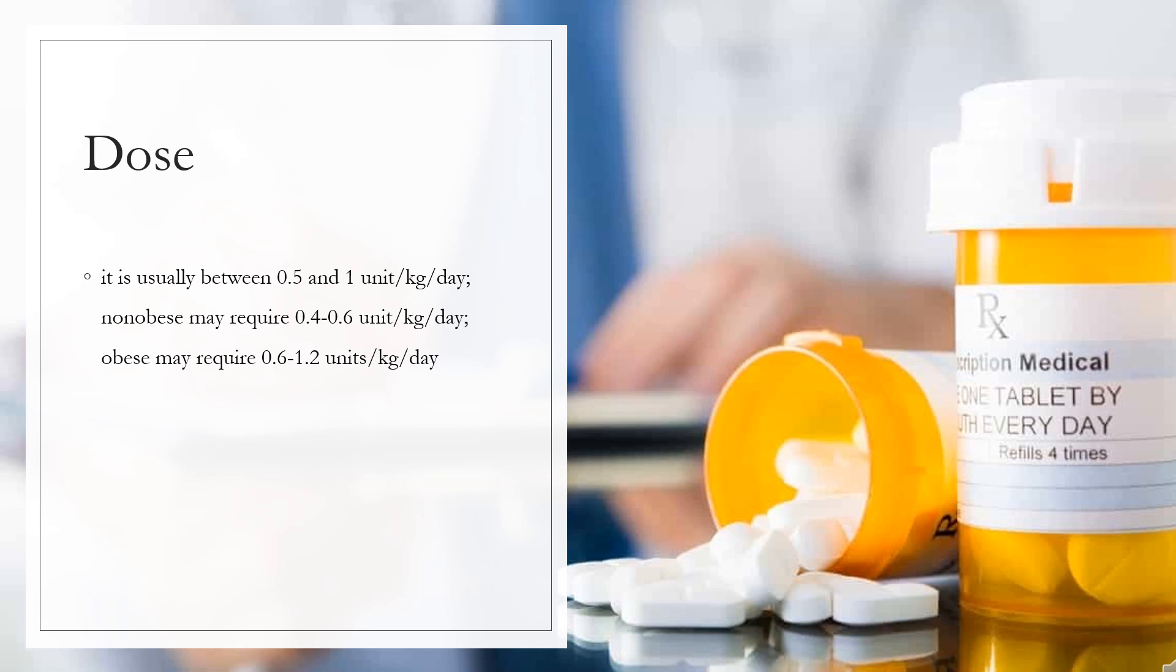Total maintenance daily insulin requirement may vary. It is usually between 0.5 and 1 unit/kg/day. Non-obese may require 0.4-0.6 unit/kg/day. Obese may require 0.6-1.2 units/kg/day.